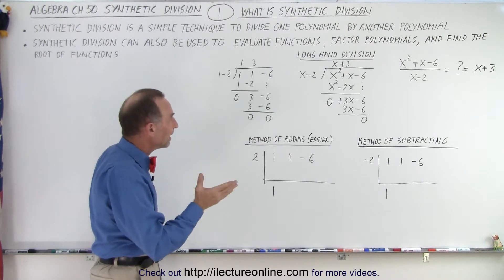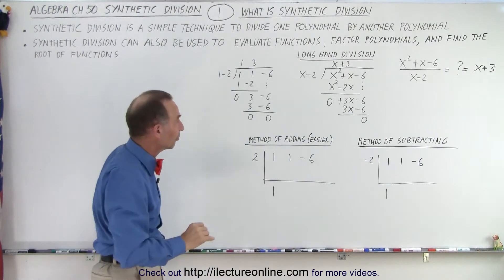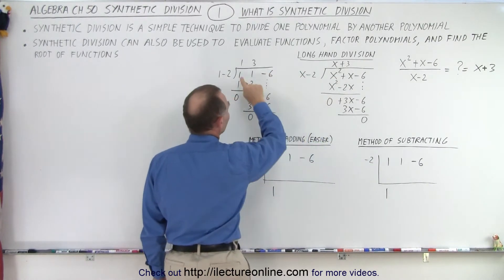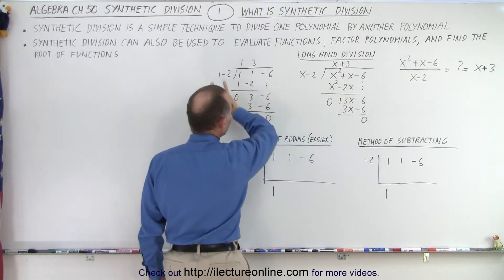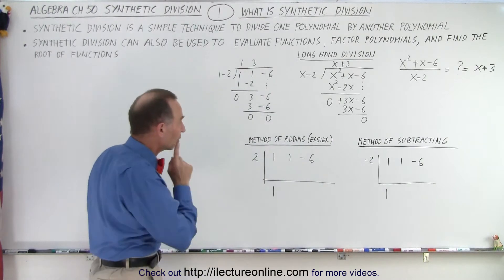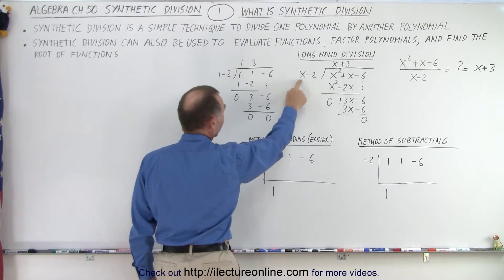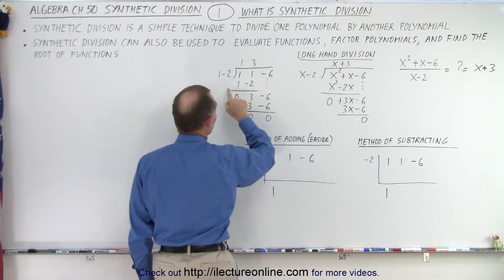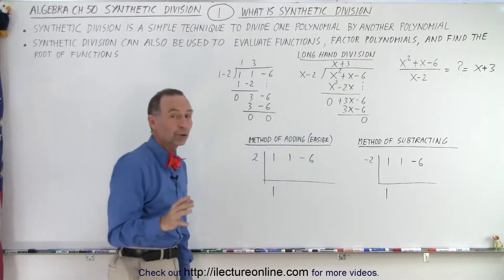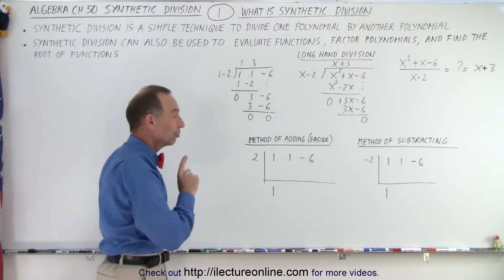Essentially, the idea is to get rid of the variables and simply use the coefficients, the numerical coefficients. So notice that this looks exactly the same as that, except instead of having the x squared and the x in there, we simply remove everything and we simply write just the numerical coefficients. And this is how we use synthetic division to get the very same result.